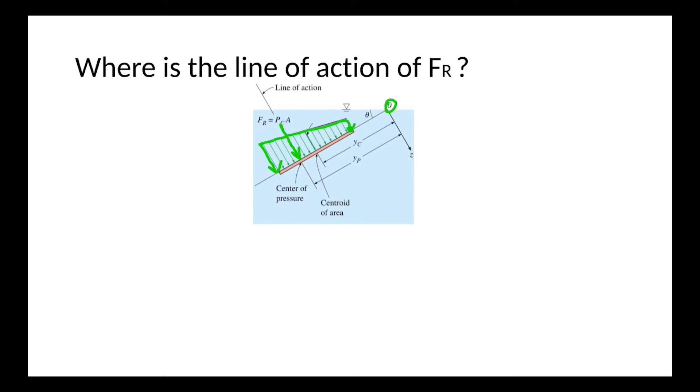If we write the moment equation, we know that FR times the moment arm is equal to the integration of this force distribution times the moment arm of it, which I will call Y. If we simplify this relation, we will see that this integration is equal to the second moment of area and this one is equal to the first moment of area.